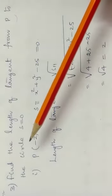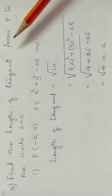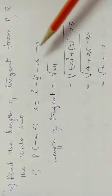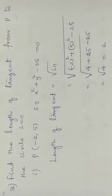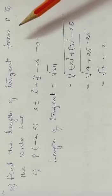Find the length of tangent from P to the circle S equal to 0. Tangent from point on the circle, and that point itself is point of contact.